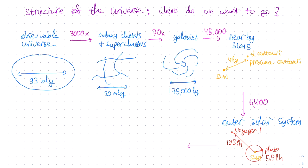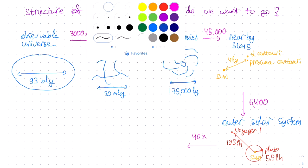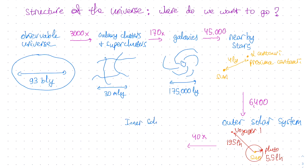Zooming in by another factor of 40, we come to the inner solar system. Here we can see the orbits of the inner planets. In particular, our own planet, the Earth, orbits the Sun at a distance of 8.3 light minutes and Mars at 12.7 light minutes.